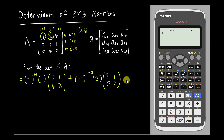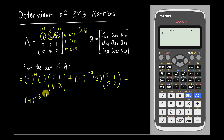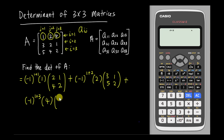For the last element in the first row, which is 4, I add negative 1 to the power of 1+3. I copy the number 4, then cancel that row and column. The remaining minor is [3, 2; 5, 4].